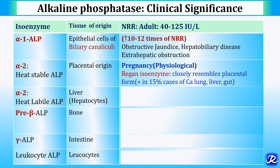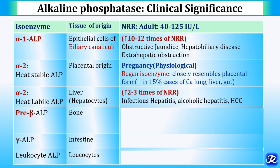Alpha-2 heat labile, present in hepatocytes, is increased in hepatic injury including infectious hepatitis, alcoholic hepatitis, and hepatocellular carcinoma, with an increase of 2 to 3 times the normal reference range.